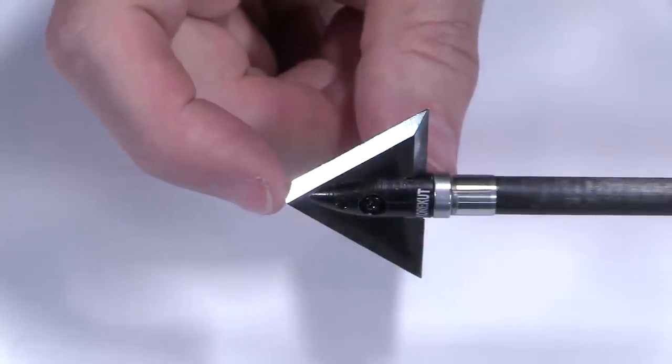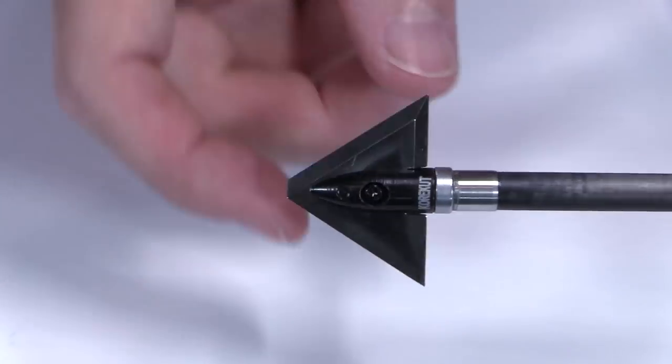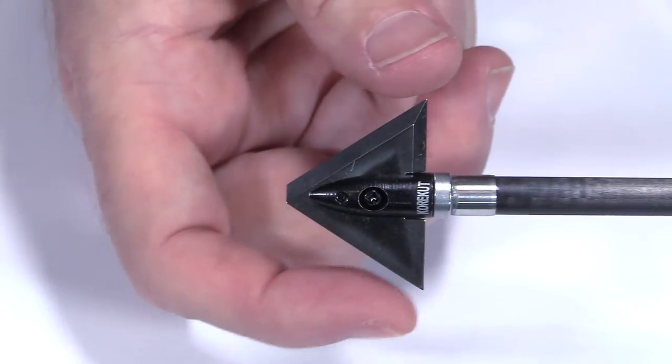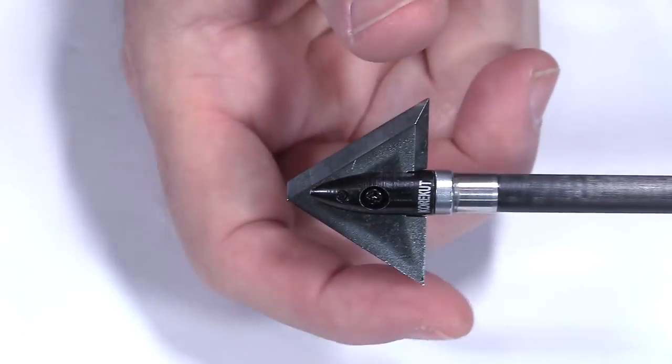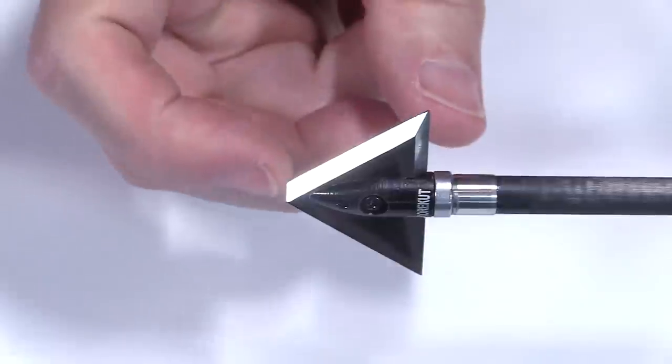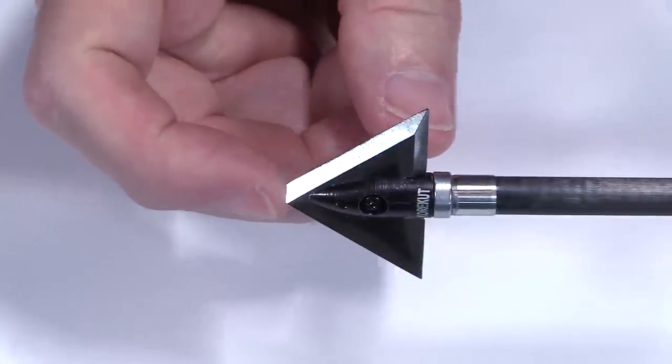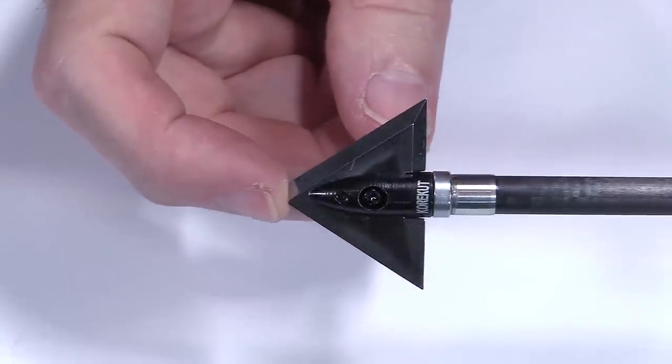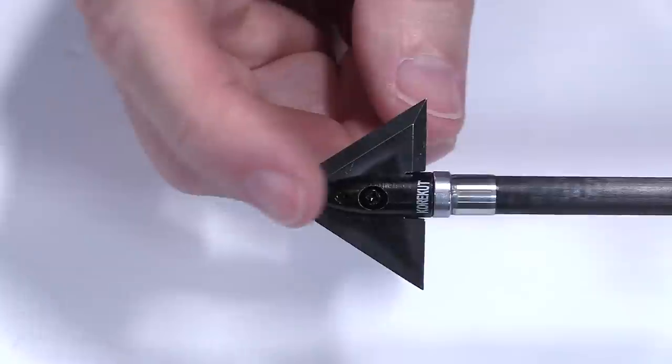It's just going to minimize surface area. This design looks really boxy like this triangle, but it's to maximize the cutting diameter and minimize the surface area to aid in penetration, rotation, as well as flight.